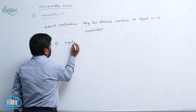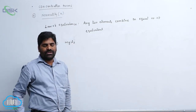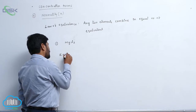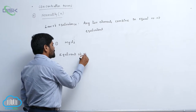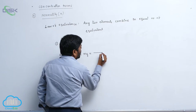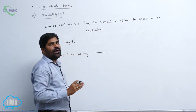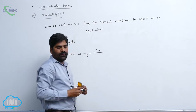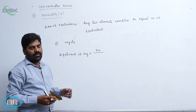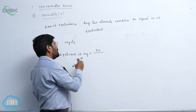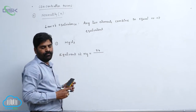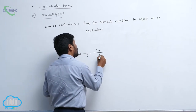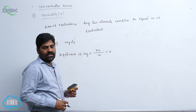Equivalent of magnesium equals to atomic weight of magnesium divided by valency. That is 24 divided by 2, which gives equivalent weight of magnesium equals to 12. So this becomes 2 equivalents of magnesium.